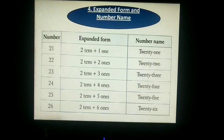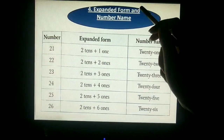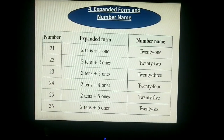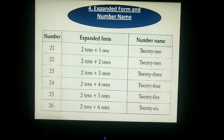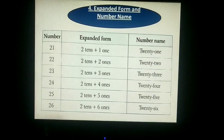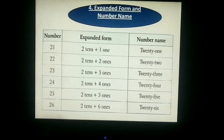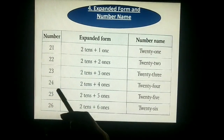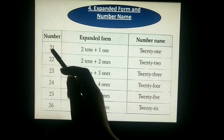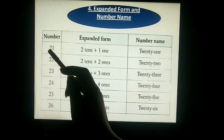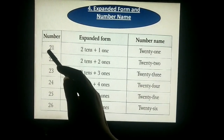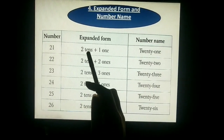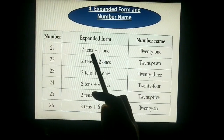So next topic is expanded form and number name. We have discussed numbers. Now expanded form and number names: if we know about ones and tens place, we will expand the form. So 21 — how many in ones place? 1. Tens place? 2. So 2 tens plus 1 ones. Expanded form: 2 tens plus 1. Number name is 21.